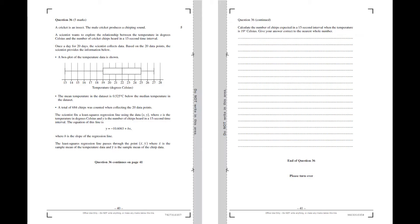We're told that a cricket is an insect, the male cricket produces a chirping sound. A scientist wants to explore the relationship between the temperature in degrees Celsius and the number of cricket chirps heard in a 15 second time interval. So once a day for 20 days the scientist collects data. Based on 20 data points the scientist provides information below, and then we're given a whole bunch of information. The first thing we're told is we get this box plot of the temperature data. We're told that the mean temperature in the data set is 0.525 degrees Celsius below the median in the data set, and we're also told that a total of 684 chirps was counted when collecting the 20 data points.